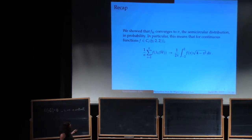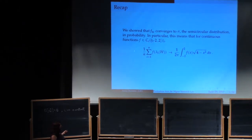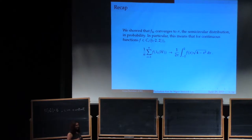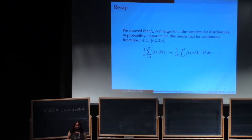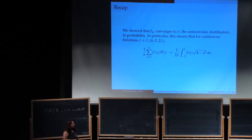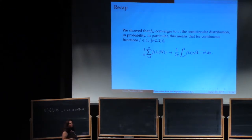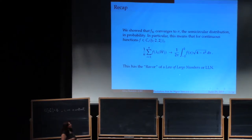We are examining the matrix W-bar, the scaling of W by one over square root of n, and the empirical spectral distribution. We showed that F of W-bar converges to sigma, the semicircular distribution, in probability. You can think of it as: the average of f(λ_i(W-bar)) over all eigenvalues converges to the integral of f over the semicircular density. This holds for polynomials and extends by Weierstrass approximation. This has the flavor of a law of large numbers.